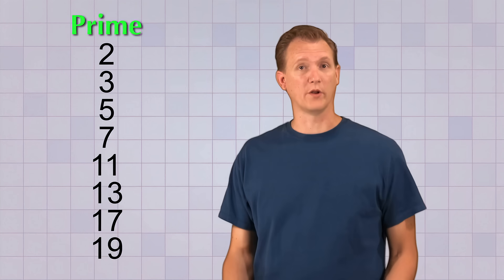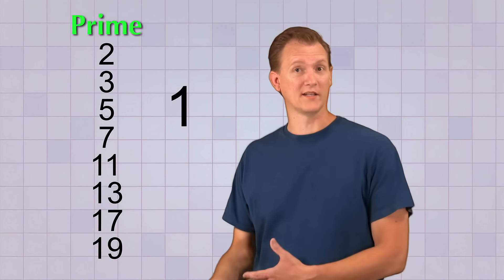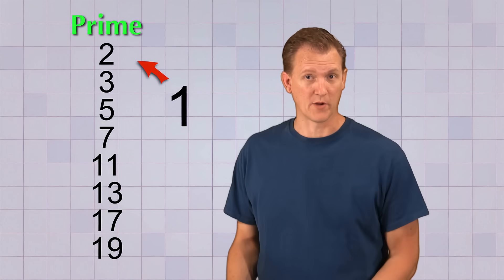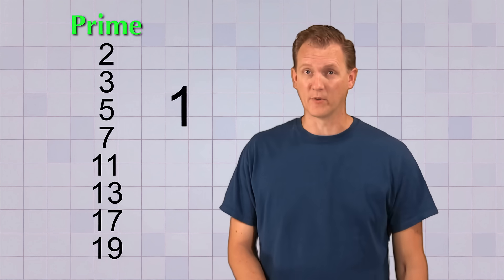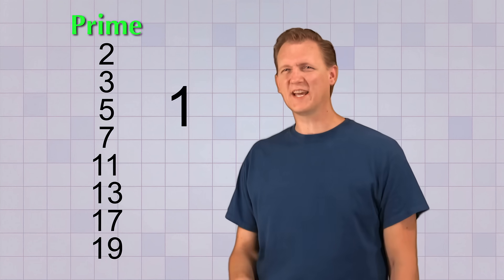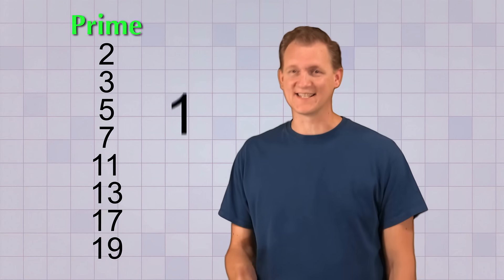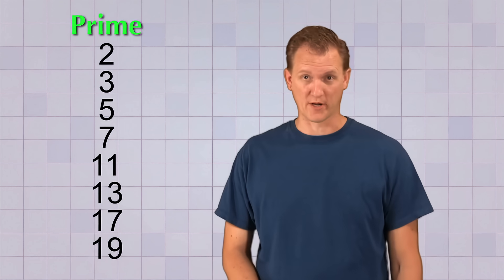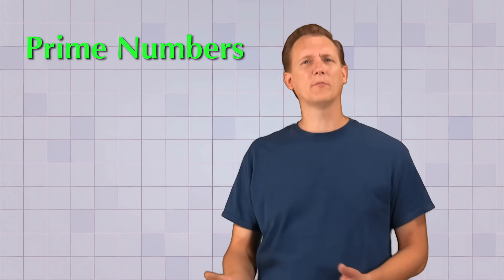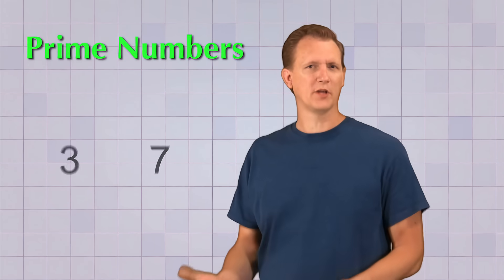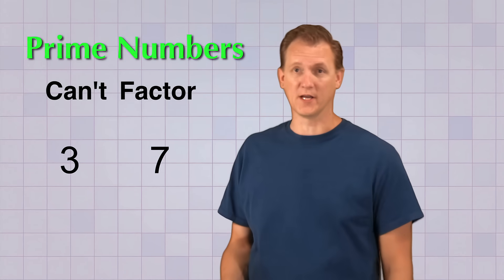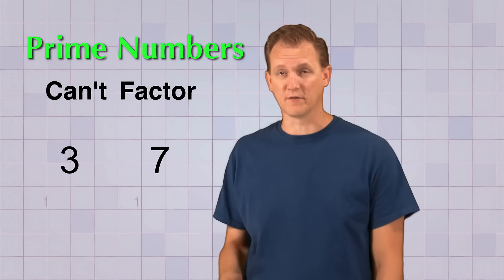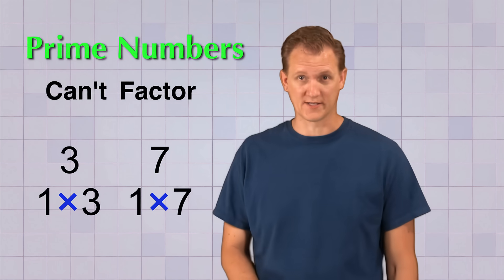Now, some of you might be wondering why 1 isn't on the list of prime numbers. Well, 1 is a lot like a prime number, but for some technical reasons it's not considered prime. So in a way, prime numbers are just special numbers that you can't factor — unless you use the obvious factors of 1 and the number itself.